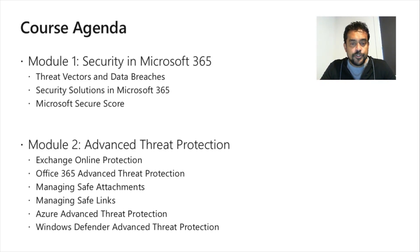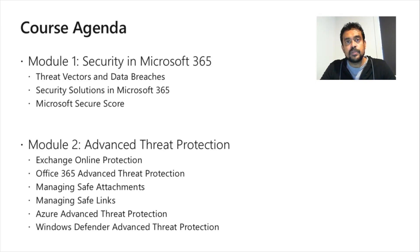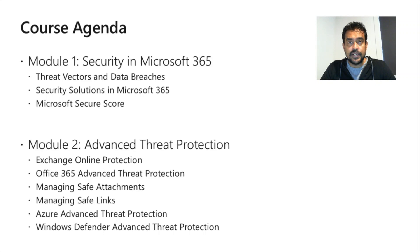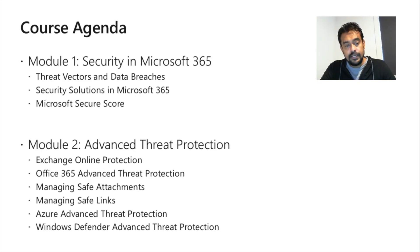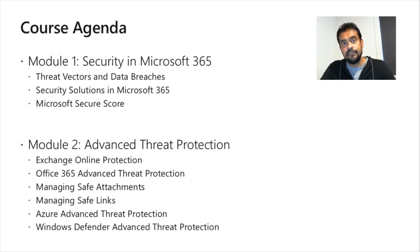Under Module 2 we'll cover Advanced Threat Protection (ATP): Exchange Online Protection, Office 365 Advanced Threat Protection, managing safe links and safe attachments, Azure Advanced Threat Protection, and Microsoft Windows Defender Advanced Threat Protection. This covers devices as well — not only the cloud but the device layer too.